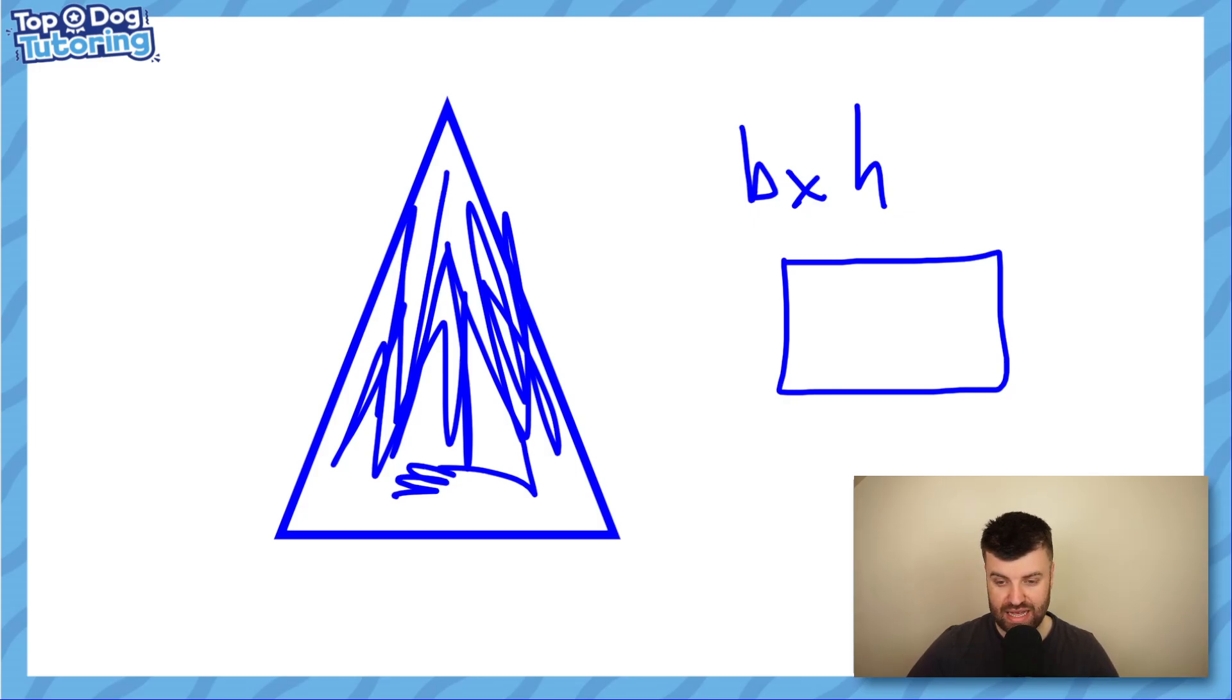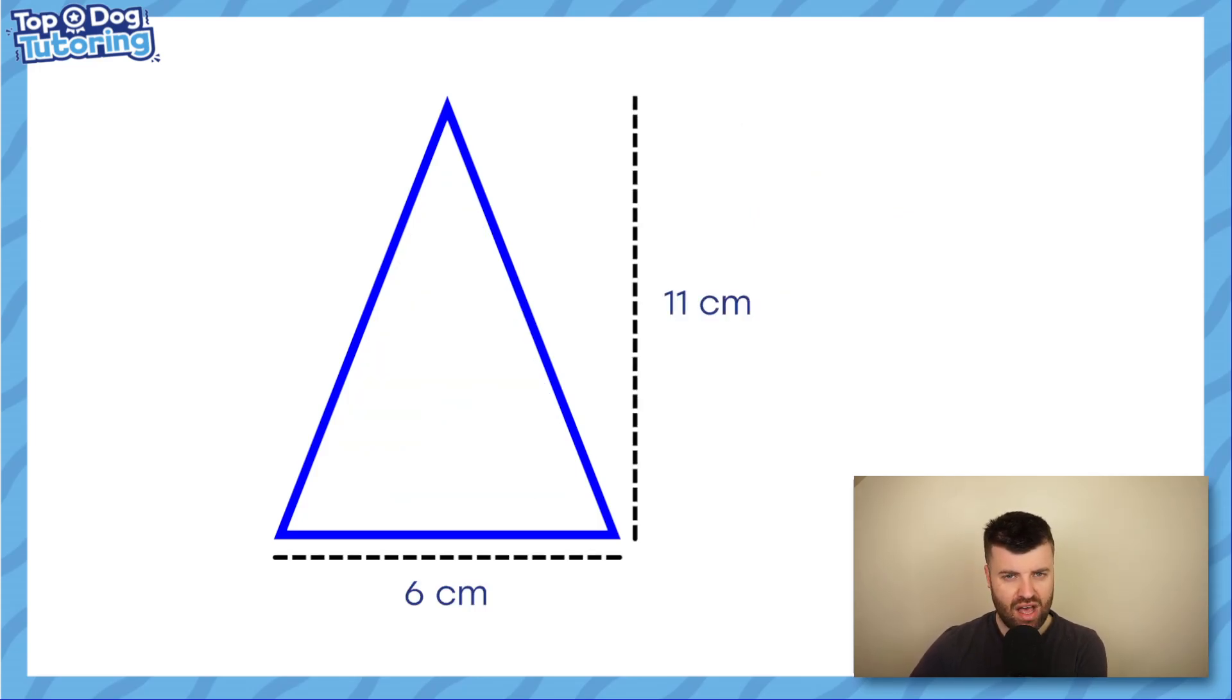So here are the dimensions we need to work out the area of a triangle. We need the base length, which in this case is six centimeters, which is base or B, which I'll write as six. We need the height of the triangle, which is the highest point perpendicular to the base.